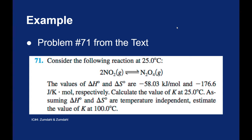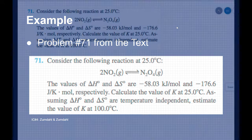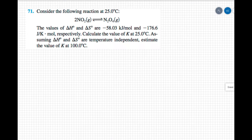The assumption we're going to make is that ΔH and ΔS are independent of temperature — that they stay constant. We're then asked to estimate what the K value would be at 100 degrees Celsius. So we're doing this problem twice: once at 25°C and once at 100°C.